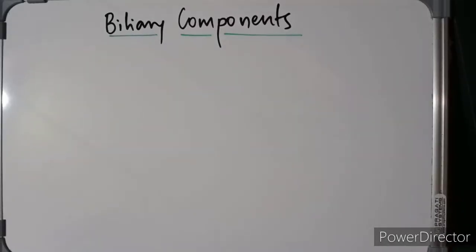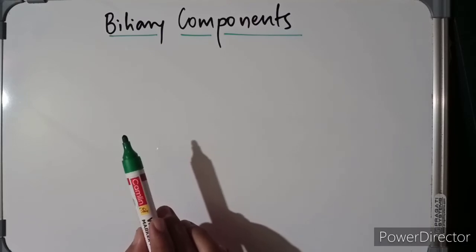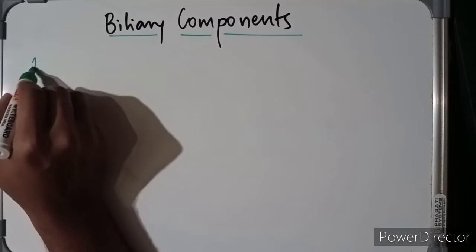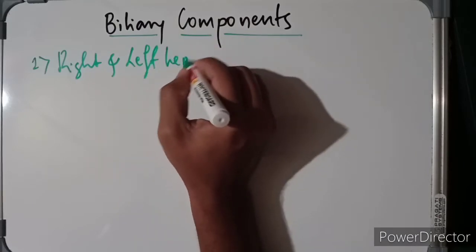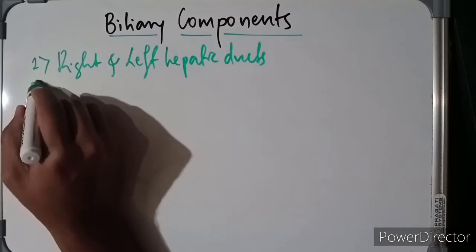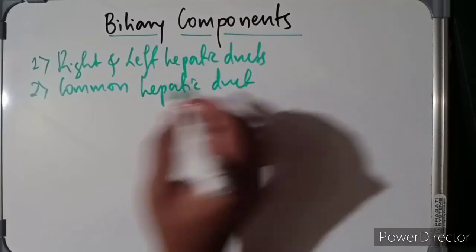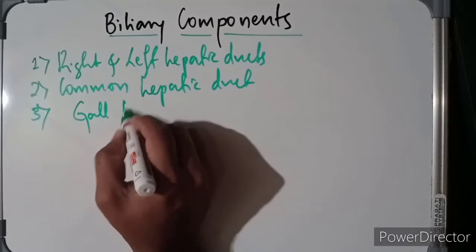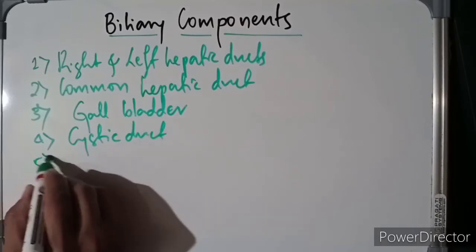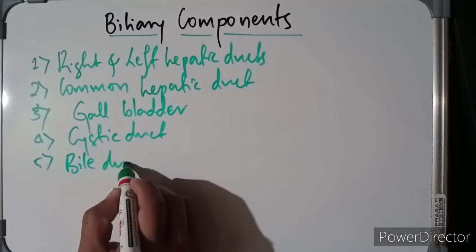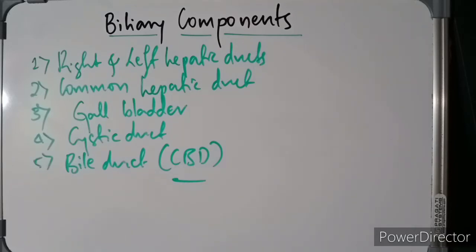Hello guys, welcome to my video. In this video we are going to discuss about the components of the biliary apparatus. We have also discussed about the introduction to the biliary apparatus and the complete anatomy of the gallbladder. The components of the biliary apparatus are: the right and left hepatic ducts, the common hepatic duct, the gallbladder, the cystic duct, and finally the bile duct, which is also called the common bile duct.